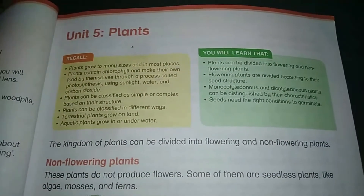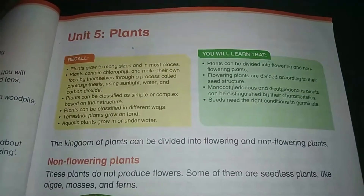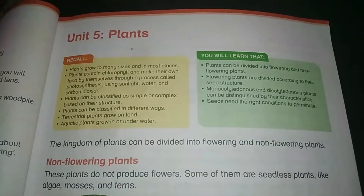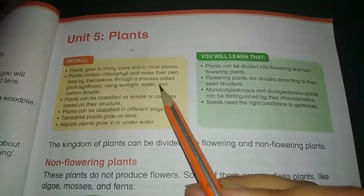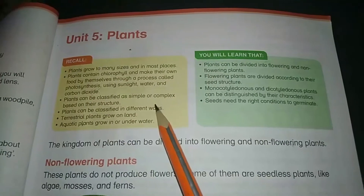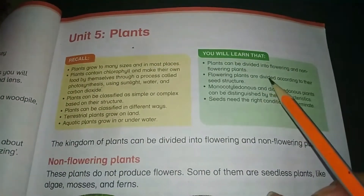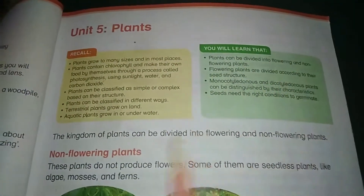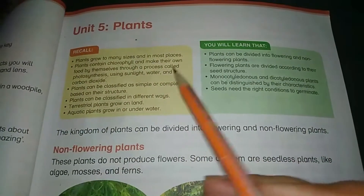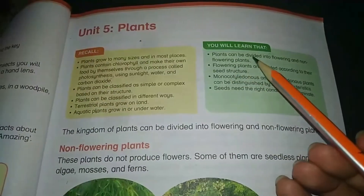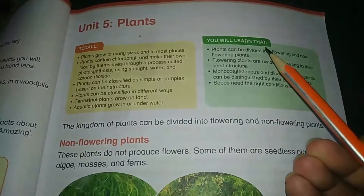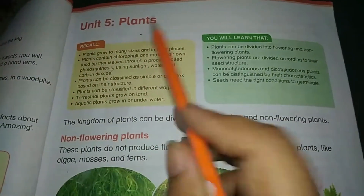We know very well about plants because plants is one of the five kingdoms. All living things in the world are divided into five kingdoms: Protists, Prokaryotes, Fungi, Plants, and Animals. We already have learned about animals, classification of animals, and special characteristics or features of animals. Now we will discuss about plants.